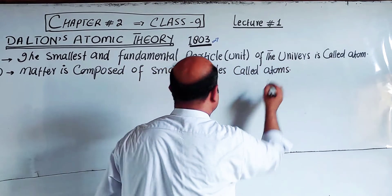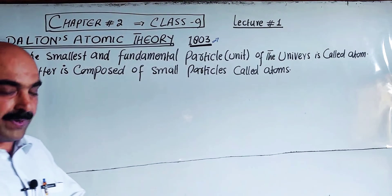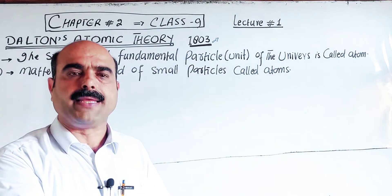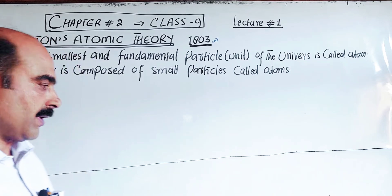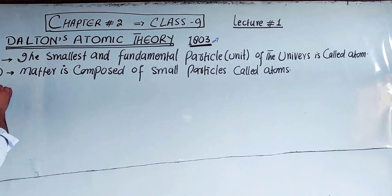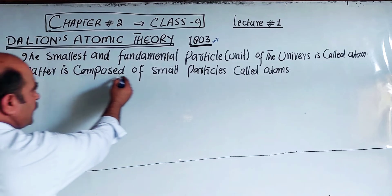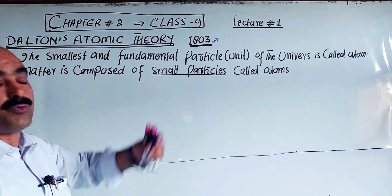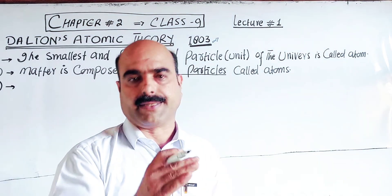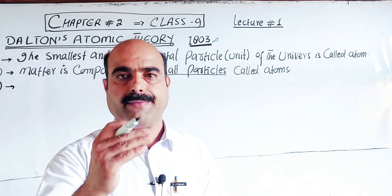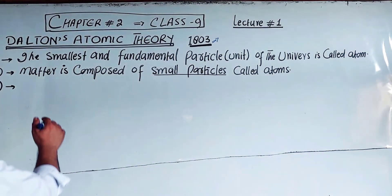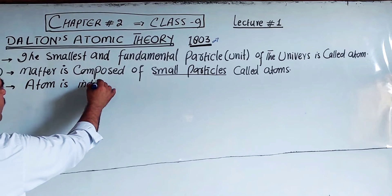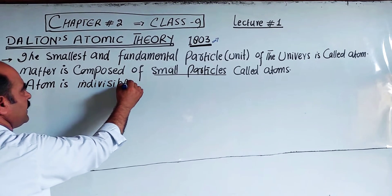All the matter in the universe is made up of extremely tiny particles. These tiny particles are called atoms. These particles are so small that they cannot be further subdivided — atom is an indivisible particle.